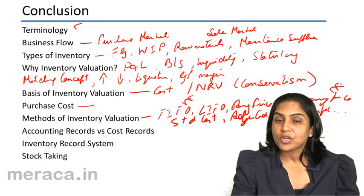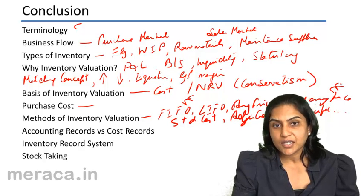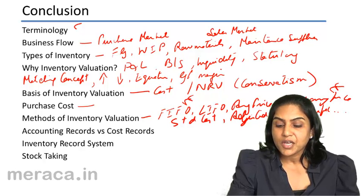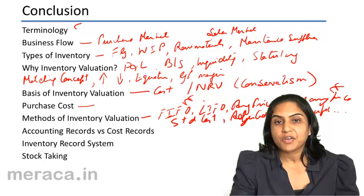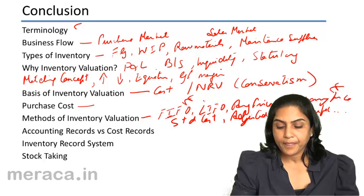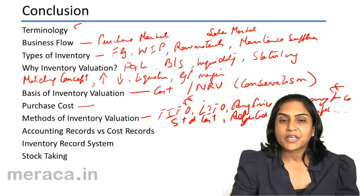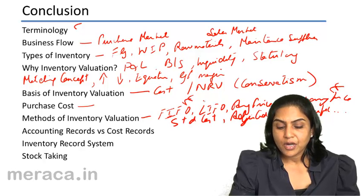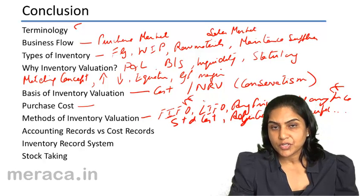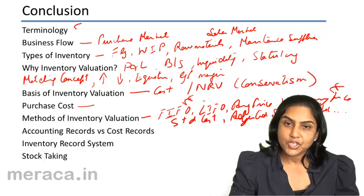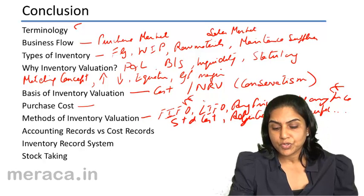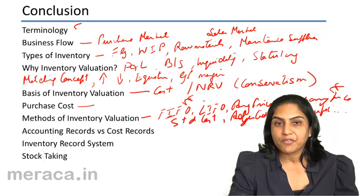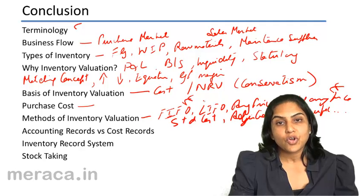We also saw the format of a store's ledger card. The example was on the basis of the first in, first out basis of inventory valuation. We briefly touched upon accounting records versus cost records — the financial books and the cost books — and how control over inventory is maintained through cost records.